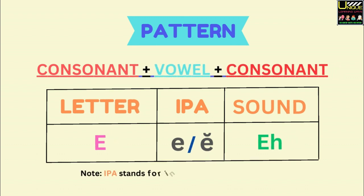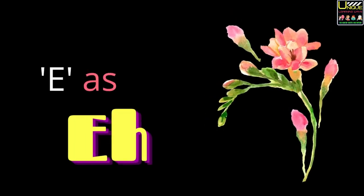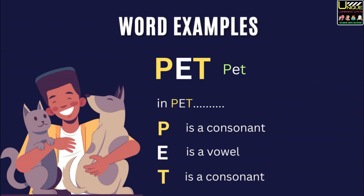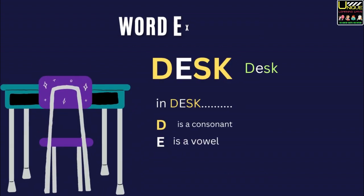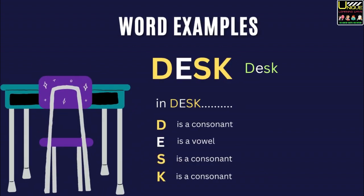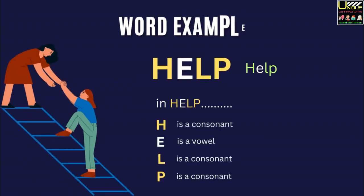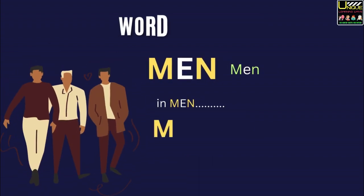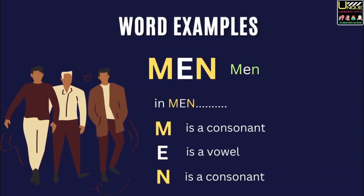Pattern: Consonant, Vowel, Consonant. Letter E, sound /ɛ/. Word examples. Pet. In pet, P is a consonant, E is a vowel, T is also a consonant. Desk. In desk, D is a consonant, E is a vowel, S is a consonant, and K is also a consonant. Help. In help, H is a consonant, E is a vowel, L is a consonant, P is also a consonant. Men. In men, M is a consonant, E is a vowel, N is also a consonant.